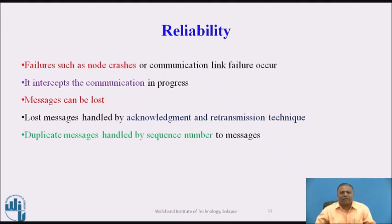Reliability: failures such as node crashes or communication link failures can occur and intercept communication in progress, causing messages to be lost. Lost messages are handled by the acknowledgement and retransmission technique. Duplicate messages are handled by assigning sequence numbers to messages, so we can identify lost or retransmitted messages.